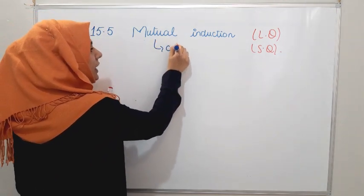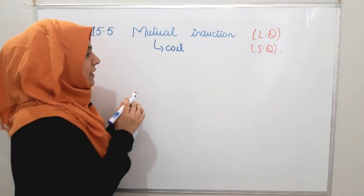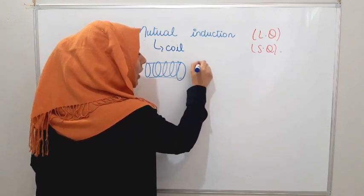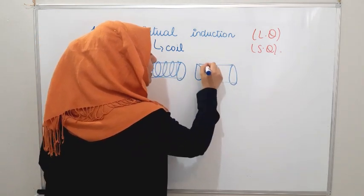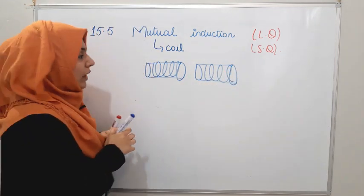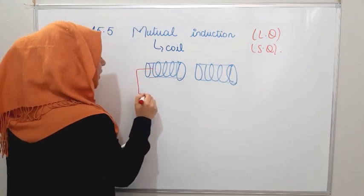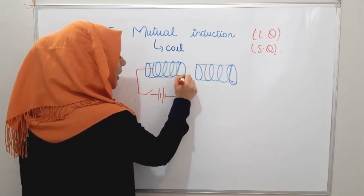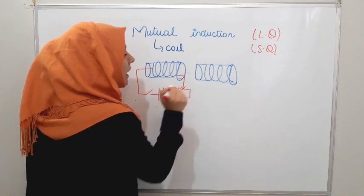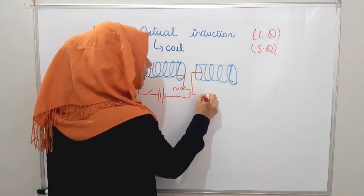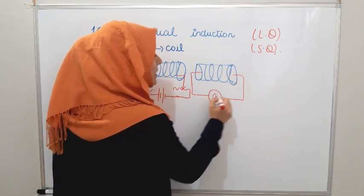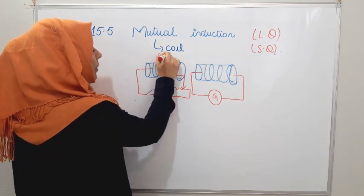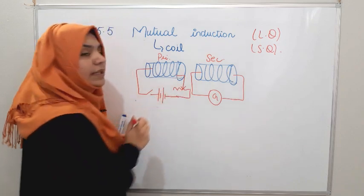Since we are going to talk about mutual induction, what do we consider? Coils. We will consider one coil and another coil close to it. We have attached the first coil to a switch, then a battery. The other coil has no supply of current or battery. We consider the first to be our primary coil and the second to be our secondary coil.